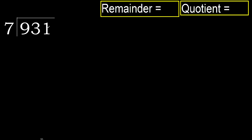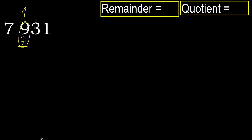931 divided by 7. 9 is not less, so we work with 9. 7 multiplied by which number is nearest to 9 but not greater? 7 multiplied by 2 is 14 — 14 is greater. Multiply by 1: 7 is not greater. Subtract: 9 minus 7 is 2.